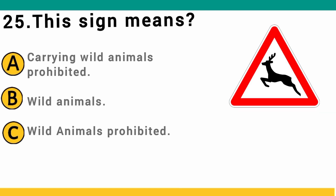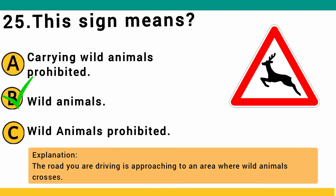This sign means: A) carrying wild animals prohibited, B) wild animals, or C) wild animals prohibited. The correct answer is B: wild animals. The road you are driving is approaching an area where wild animals may cross.